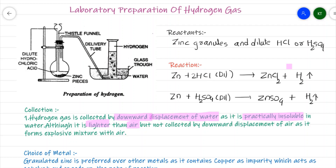Hydrogen gas is collected by downward displacement of water because, first, it is practically insoluble in water, and second, if we try to collect it over air, hydrogen gas forms an explosive mixture with air. That is why we do not collect it over air.